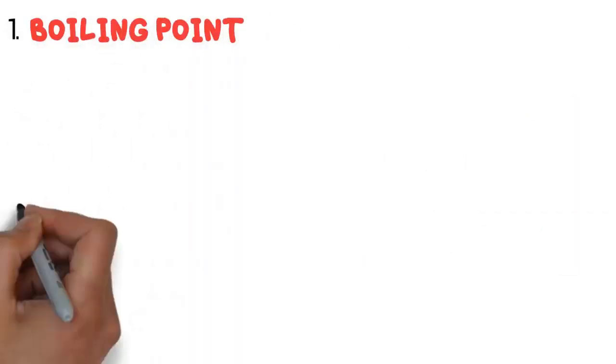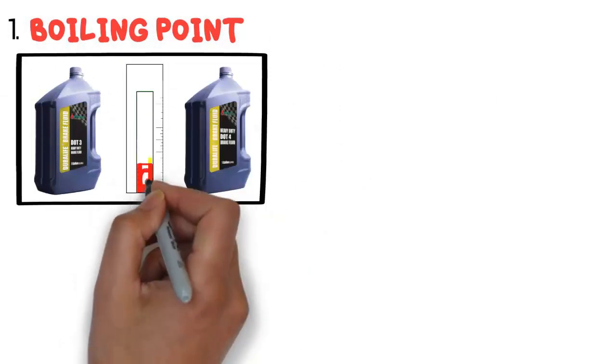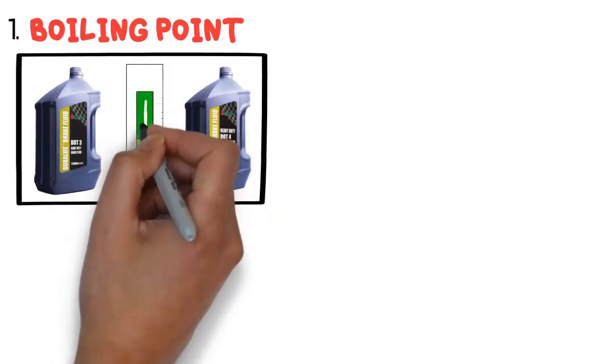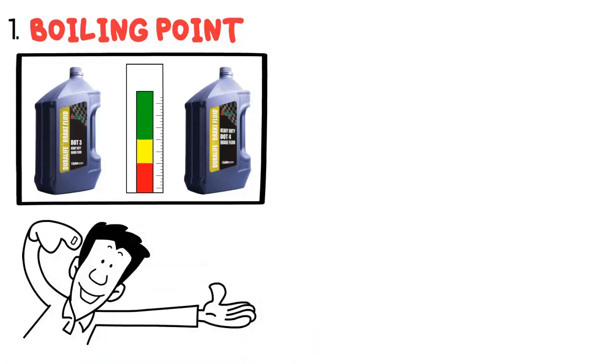Number one: boiling point. The major difference between DOT 3 and DOT 4 is the boiling point and their tenacity to absorb water. There are two different types of boiling points.